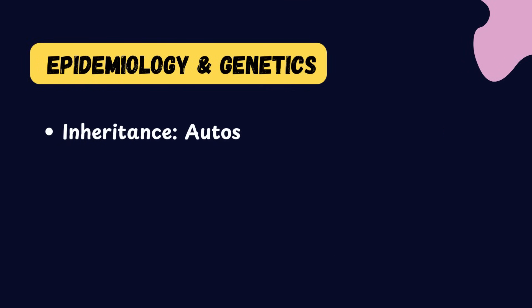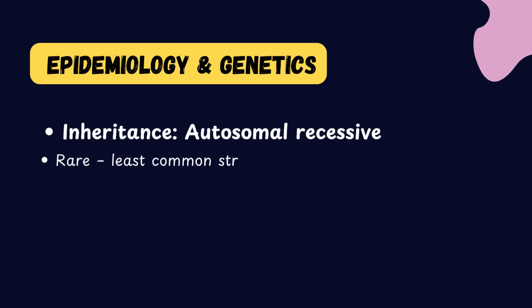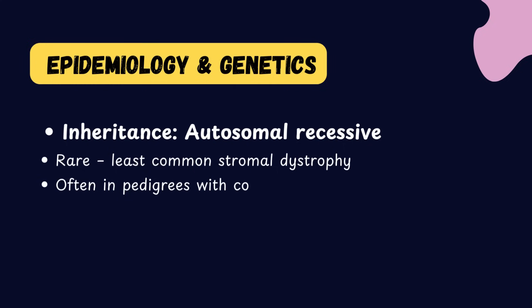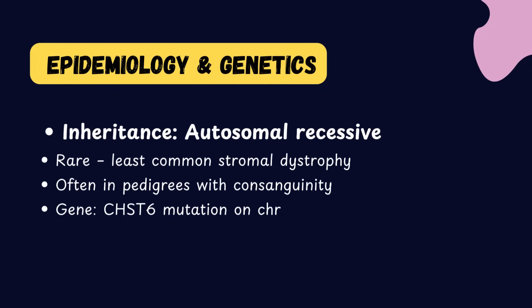The inheritance is important and commonly asked in examinations. Most corneal dystrophies are autosomal dominant, whereas macular corneal dystrophy is inherited as an autosomal recessive trait and is often seen in consanguineous families. The gene is located on chromosome 16 and the mutations involve the CHST6 gene.